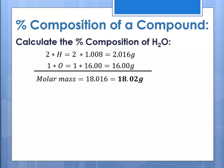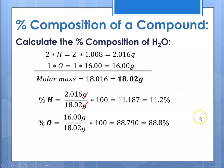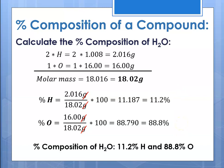Molar masses should always be rounded to the hundredths place, even when they contain hydrogen. The percent hydrogen is hydrogen's contribution of 2.016 divided by the molar mass times 100, which comes out to 11.187 — rounding to the tenths place, that's 11.2%. For oxygen, it's 16 grams divided by the molar mass times 100, giving 88.79, which rounds to 88.8%. Note that grams cancel out, leaving just a percent. And 11.2 + 88.8 = 100, confirming the percent composition of water is 11.2% hydrogen and 88.8% oxygen.